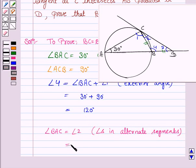Angle 2 is 30 degrees since angle BAC is 30 degrees.